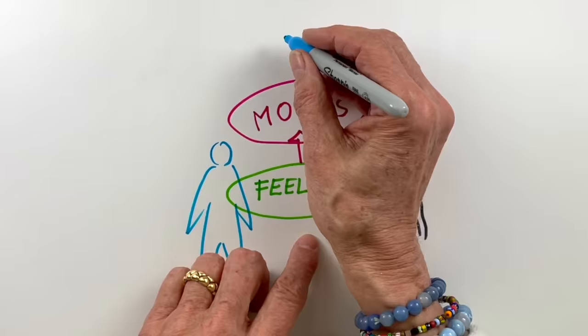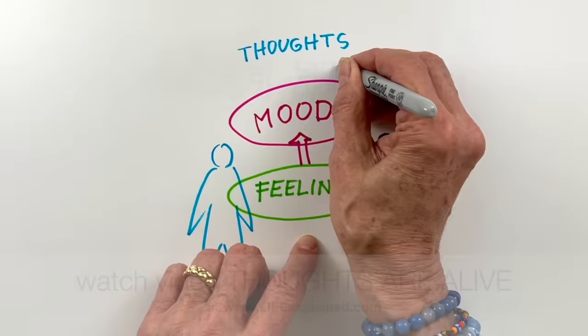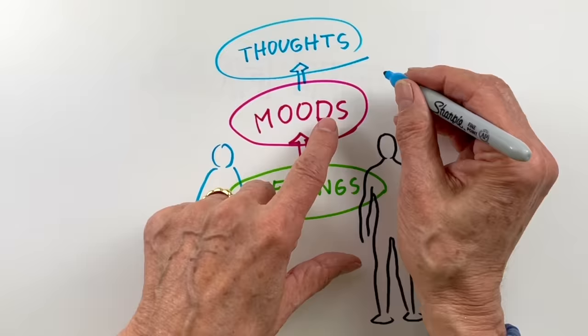And we give these moods their names like sad, grumpy, mad, happy and so on. And thoughts can help us to explore the origin of our mood and how to change them.